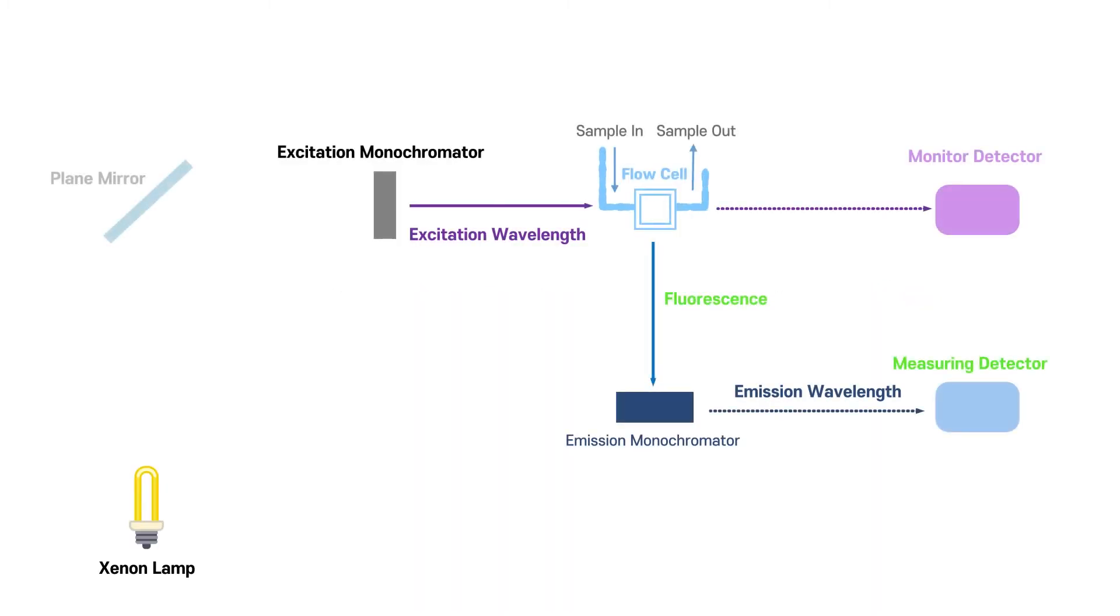The xenon lamp is typically used as a light source to provide light at wavelengths ranging from 200 nanometers up to 700 to 900 nanometers. When it irradiates the light, there can be a plane mirror to change the direction, and the excitation monochromator selects the desired excitation wavelength for the compound.